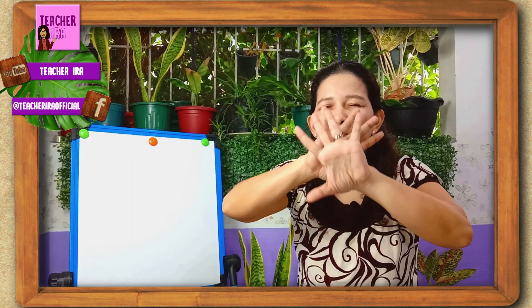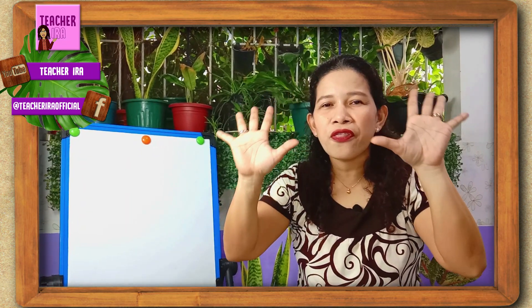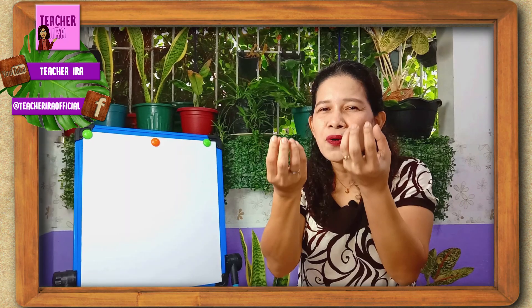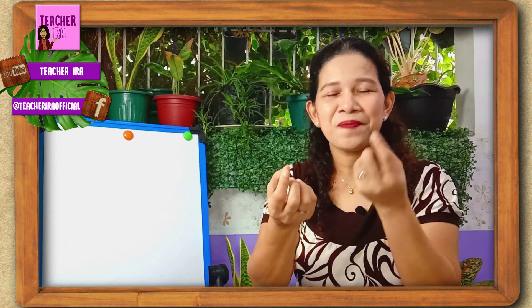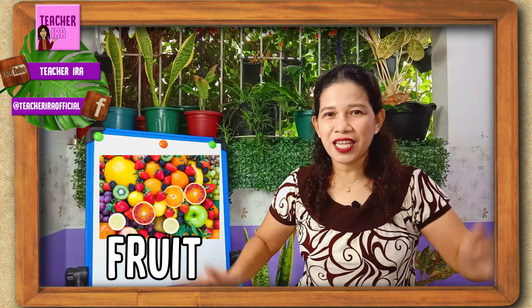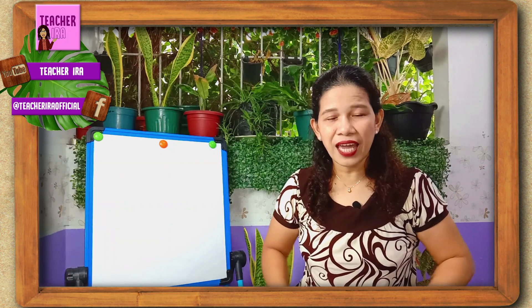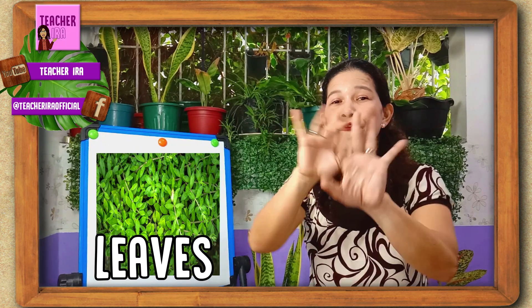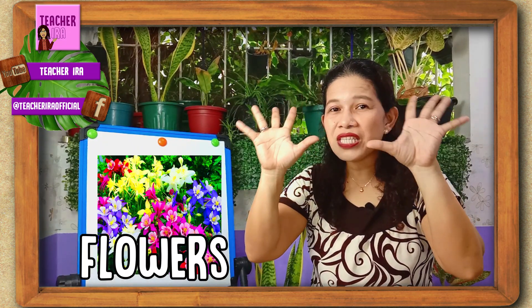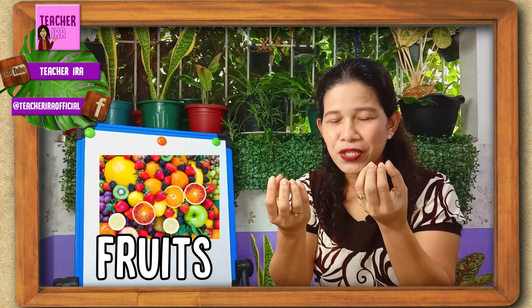How about those beautiful things — the most beautiful part of the plant? Yes, the flower. How about those little things that you can eat? Yes, the fruits. Okay, let's say them once again: roots, stem, leaves, flowers, and fruits.